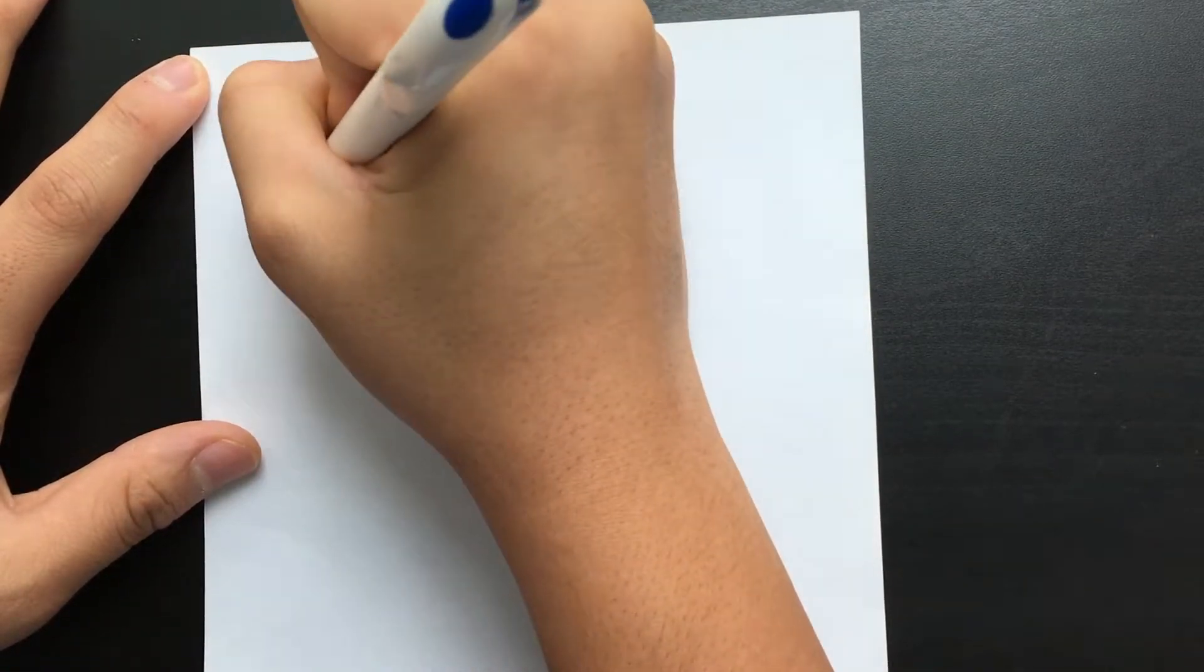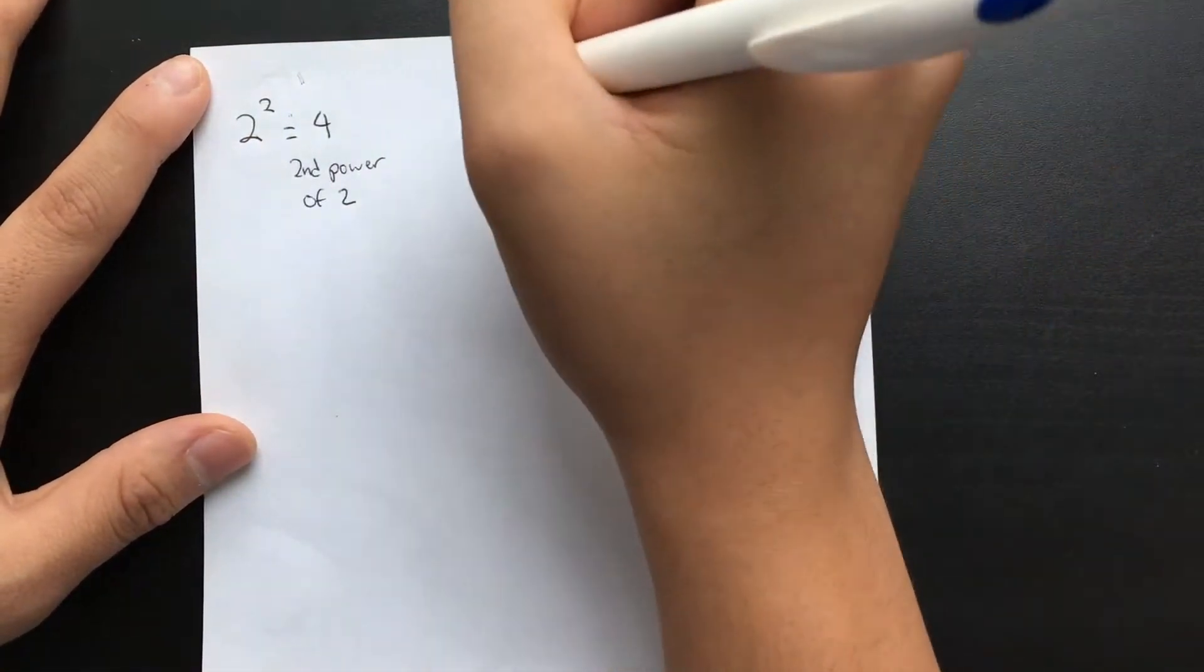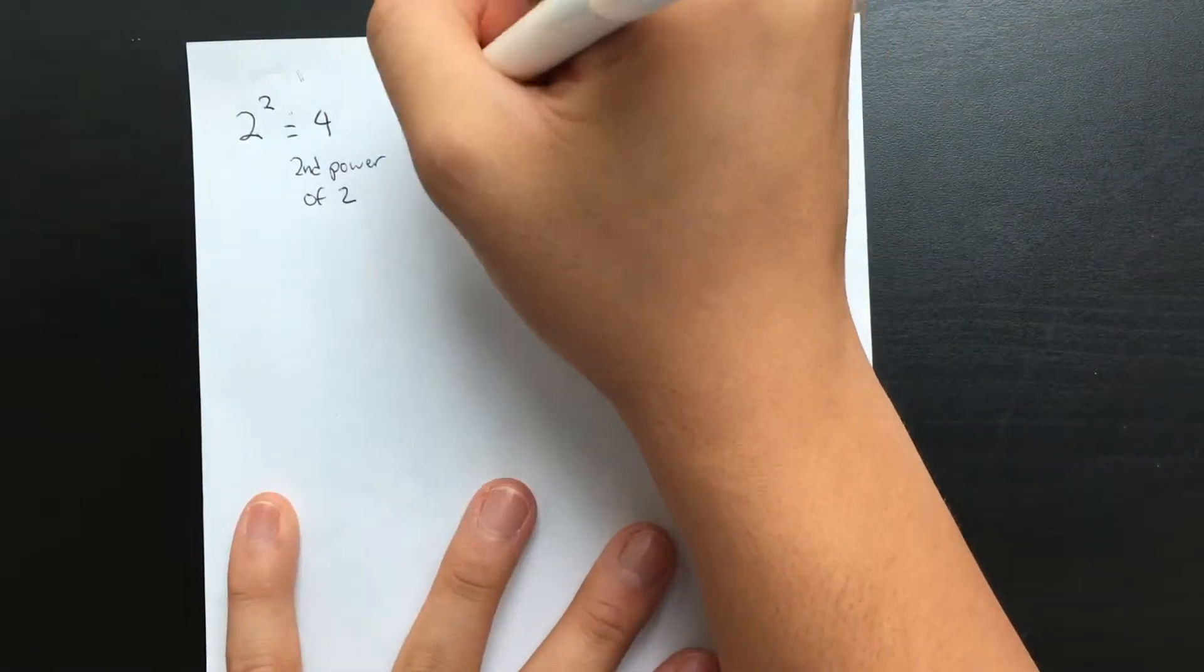To refresh your memory, 2 to the power of 2 equals 4, so 4 is the second power of 2.